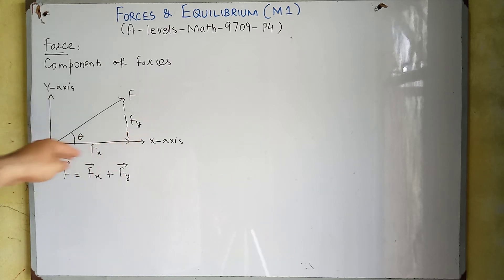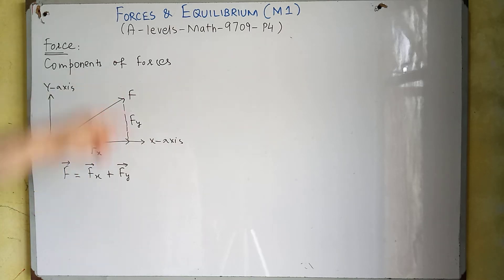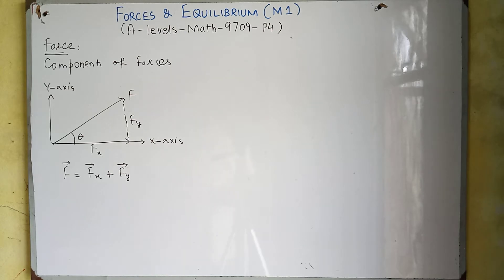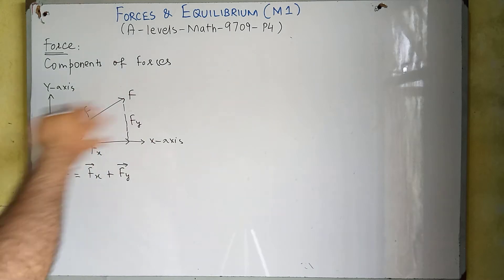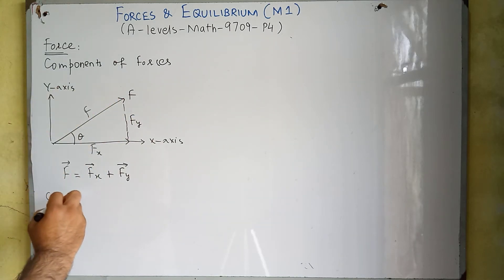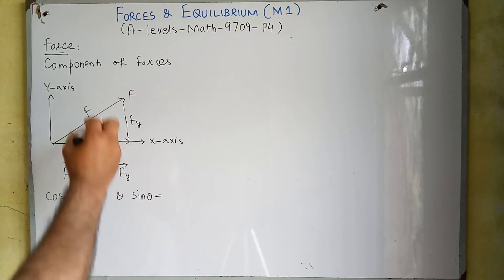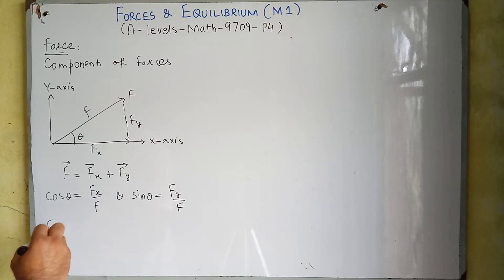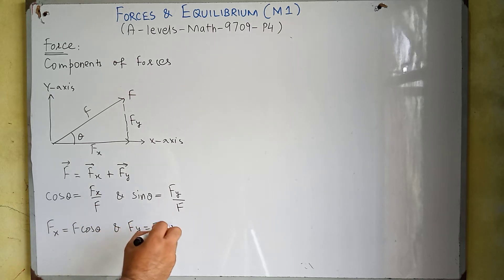This component is called Fx — it is the horizontal component and it is working along the x-axis. The other component is the y-component and it is working along the y-axis. If you add these two components we will have force F. In this triangle, if we find cos theta we will have Fx over F, and if we find sine theta we will have Fy over F. Simplifying these relations: Fx is equal to F cos theta and Fy is equal to F sine theta.